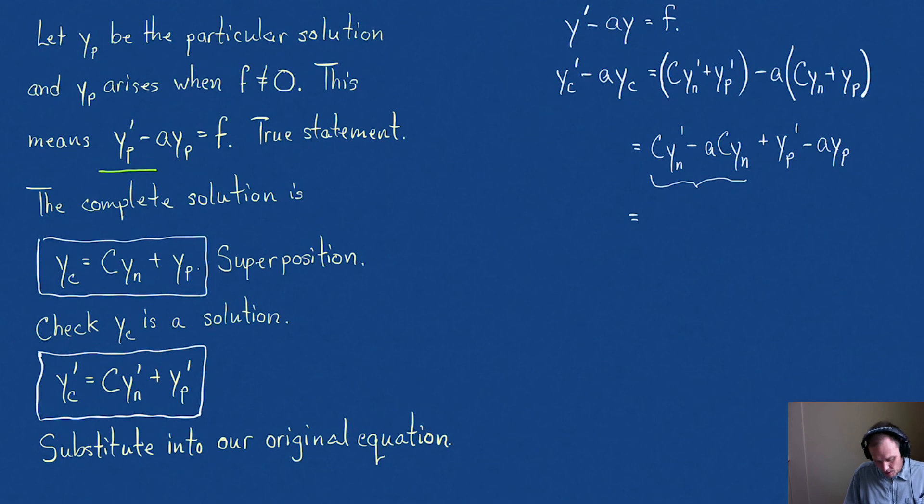This is just zero plus, what is y_p' - ay_p? Well, that's the particular solution. So this piece just equals the function f. Zero plus f, this is f.